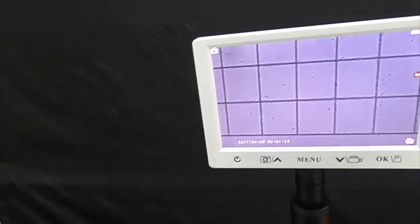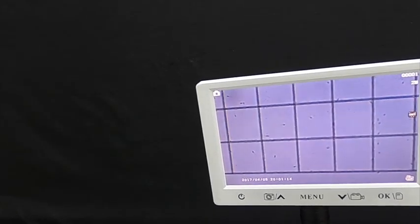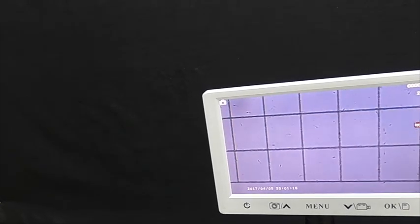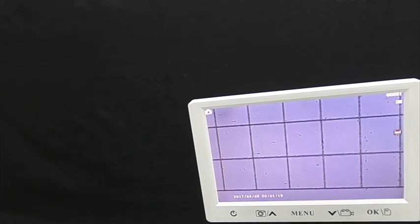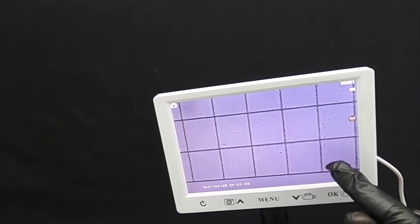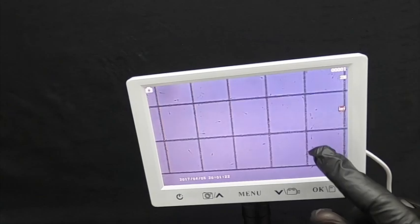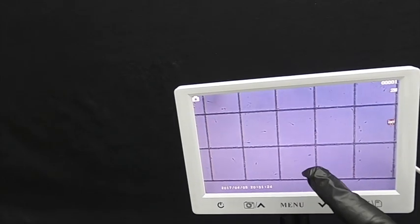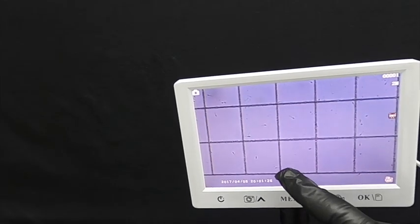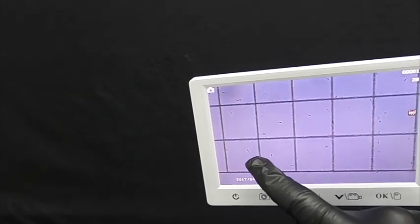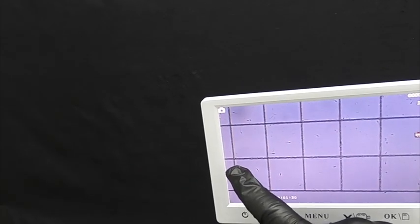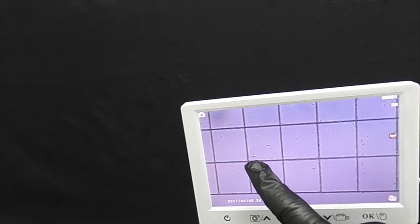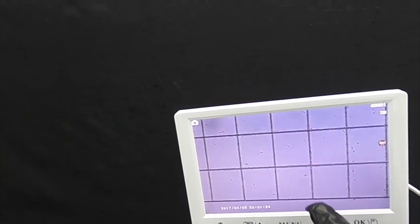Adjusting the brightness a little bit. Now we're going to count all the ones we can see within the grids. Starting from right to left: 1, 2, 3, 4, 5, 6, 7, 8, 9, 10, 11, 12, 13, 14, 15.